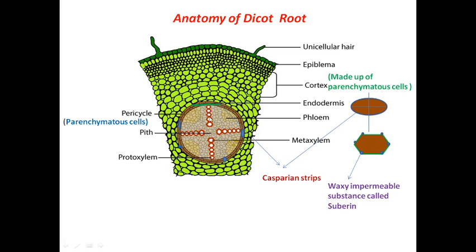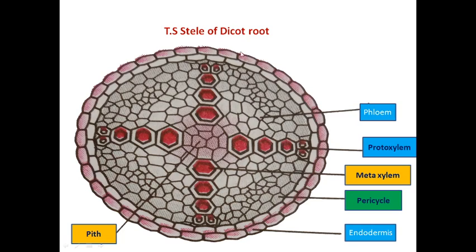The condition of the xylem here is exarch — the protoxylem faces outward and the metaxylem faces inward. Metaxylem is bigger than protoxylem. In the interior we have the pith, and the pith in a dicot root is not well developed. There are also some cells filling the spaces between xylem and phloem — these cells existing between the xylem and phloem are termed conjunctive tissue.